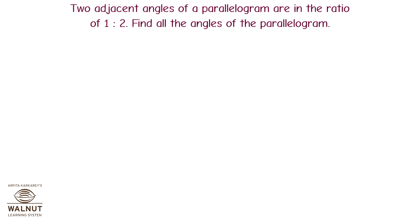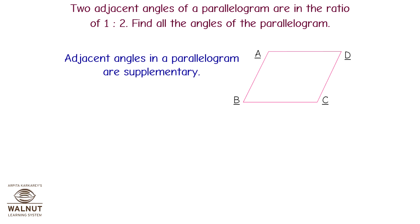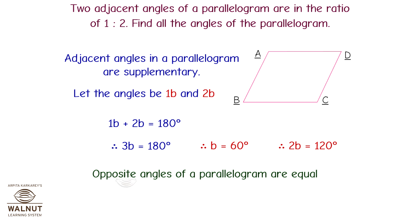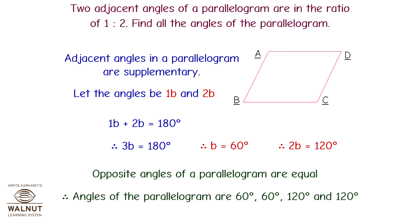Two adjacent angles of a parallelogram are in the ratio 1:2. Find all the angles. Adjacent angles in a parallelogram are supplementary. Let the angles be b and 2b. Then b + 2b = 180°, so 3b = 180°, giving b = 60° and 2b = 120°. Since opposite angles of a parallelogram are equal, the angles are 60°, 120°, 60°, and 120°.